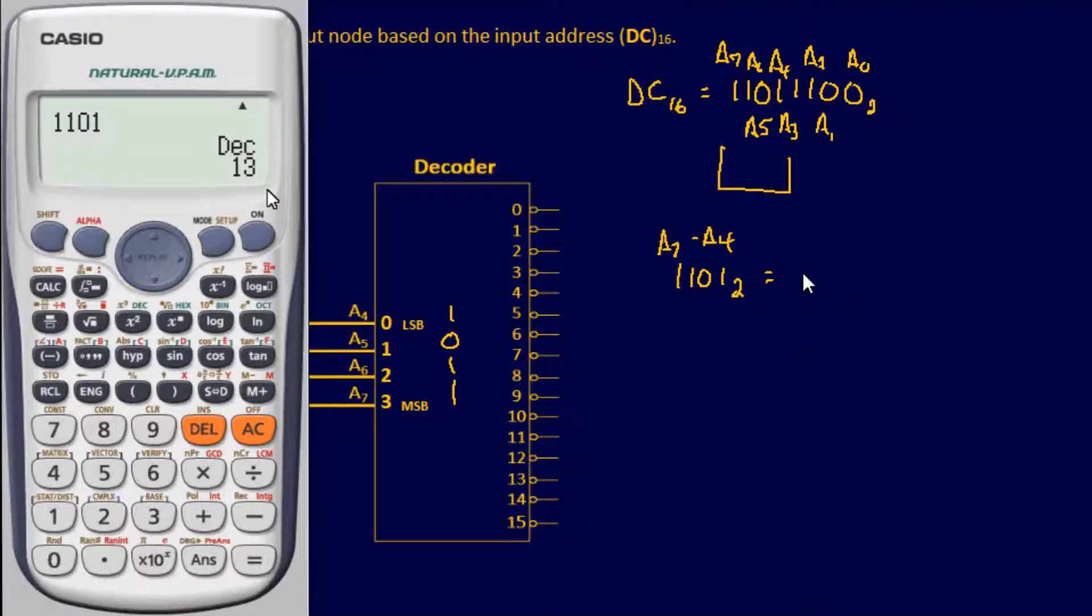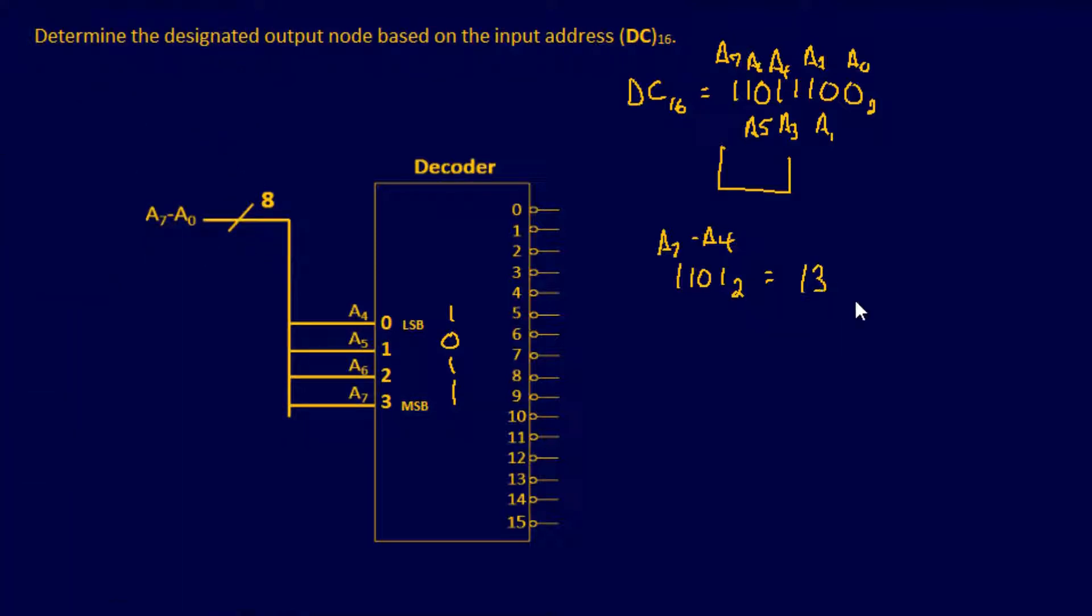is going to be a base 10 number of 13. And I'll say that's base 10, that way you know what format it's in. So which means the node it's going to correspond to is this guy right here.